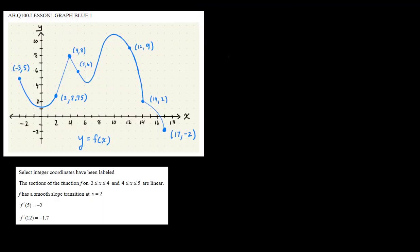Now let's use this blue function as our class example. This blue function is y equals f of x, and we're going to do a ton of analyses of this function. Some of the parts we're going to use slope — or the derivative, same thing — to justify our results. It says here that select integer coordinates have been labeled, along with one coordinate that is not an integer. The sections of the function from 2 to 4 and from 4 to 5 are linear — so this is a line segment part of the function, as is this part here.